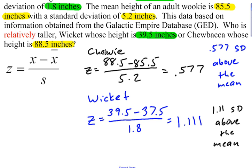Whereas Chewbacca is closer to the mean. His height is only 0.577 standard deviations above the mean. So, what this tells us is that Wicket is relatively taller than Chewbacca when you compare them to their own race.